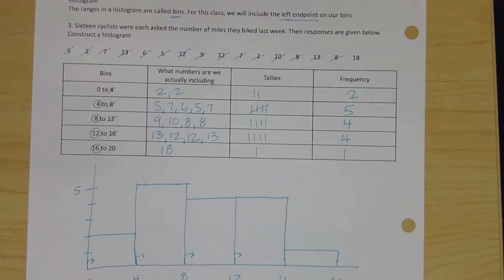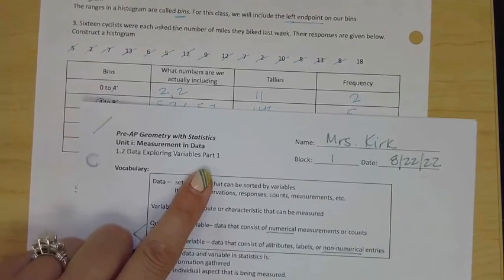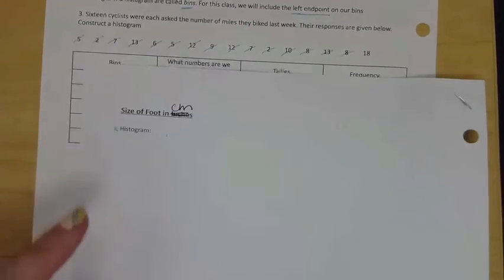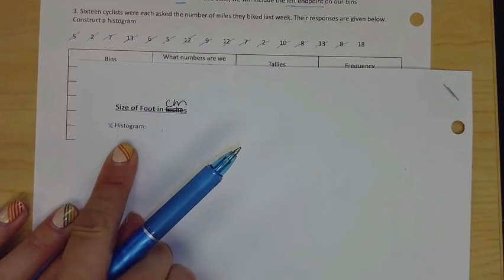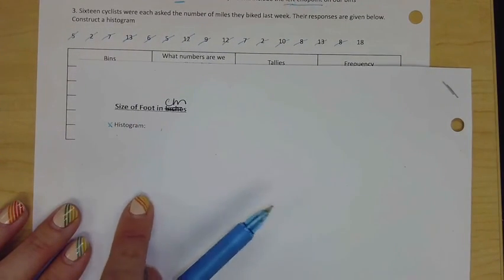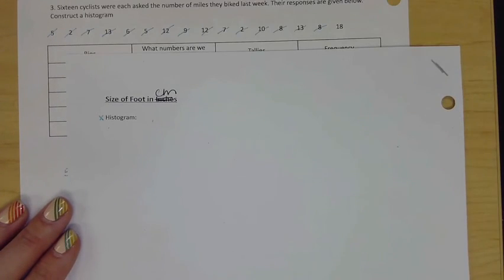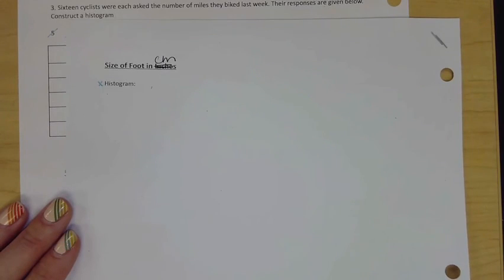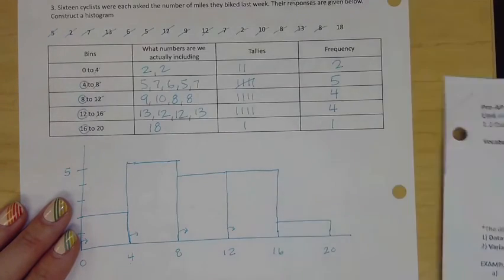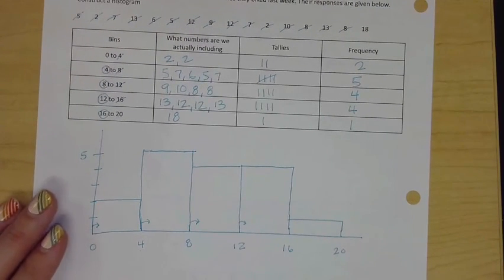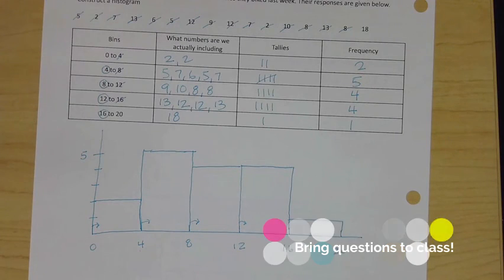Your homework, so to speak, is going to be to go back to part one's notes, and I want you to go ahead and make the histogram now for the size of foot in centimeters information. You're going to create a histogram on this paper, and that's it. That's just something we're going to go over tomorrow. So you're going to complete this ed puzzle, make a histogram, and you're done. All right, see you tomorrow.